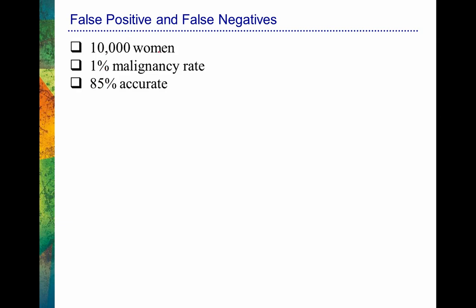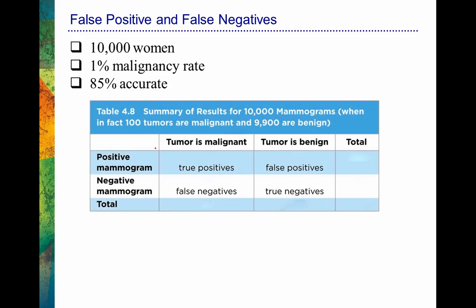Let's summarize these results in a table. We have 10,000 women overall, a 1% cancer rate, and the test is 85% accurate for both correct positives and correct negatives. In the table we cross mammogram outcome — positive or negative — with tumor status — cancerous or non-cancerous. If your mammogram is positive and your tumor is malignant, that's a true positive. If your mammogram is negative but your tumor is cancerous, that's a false negative.